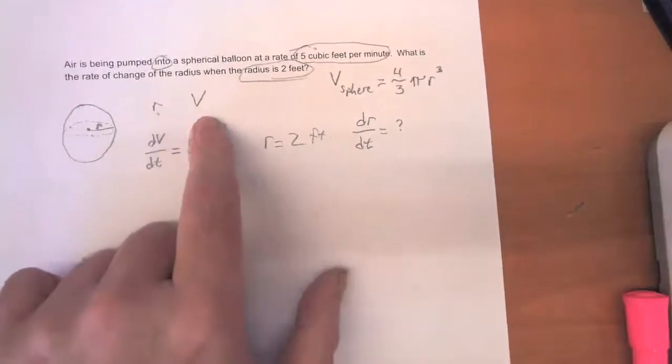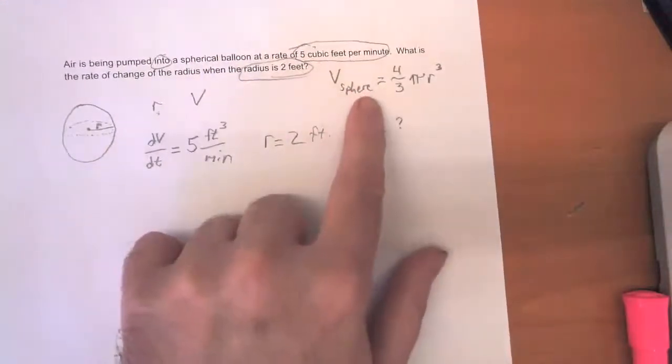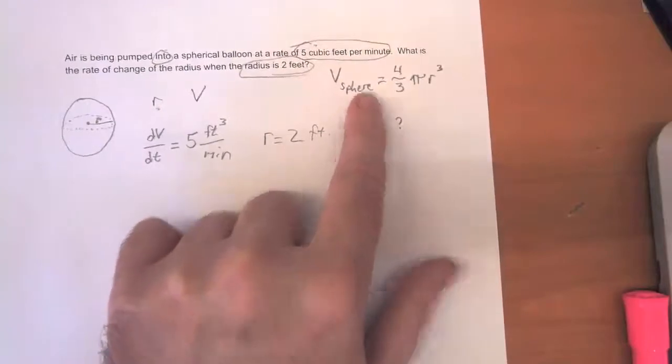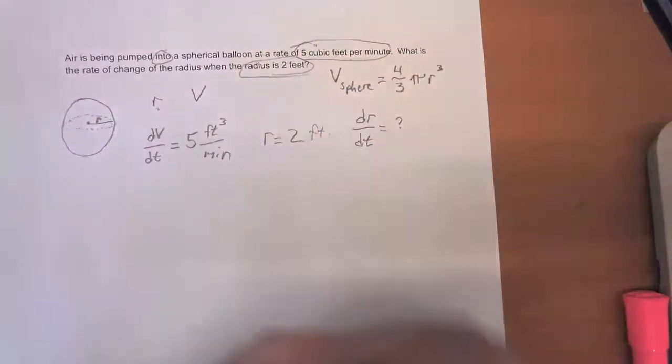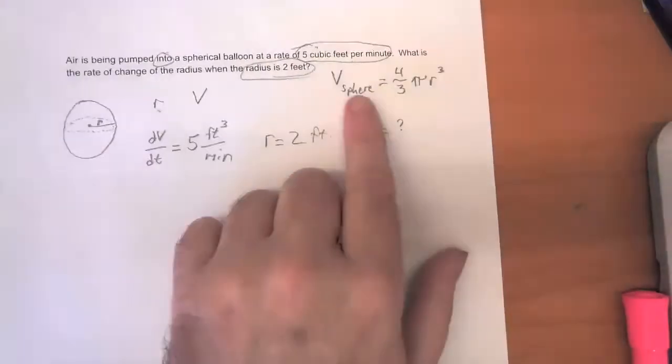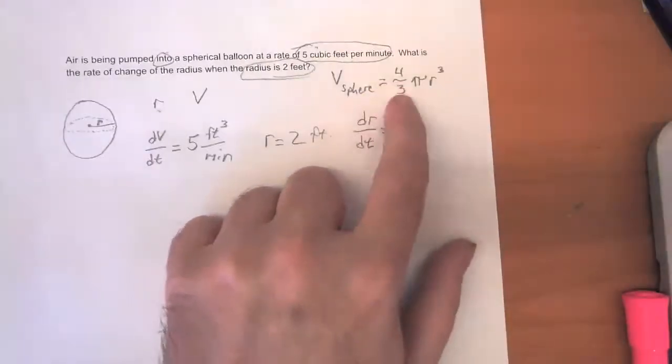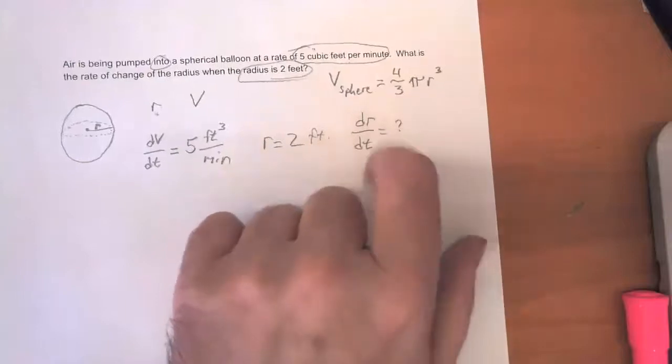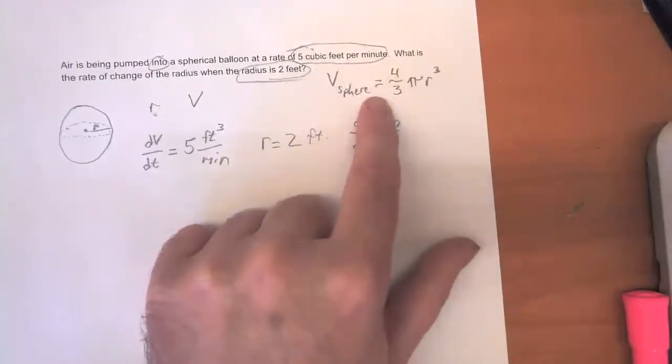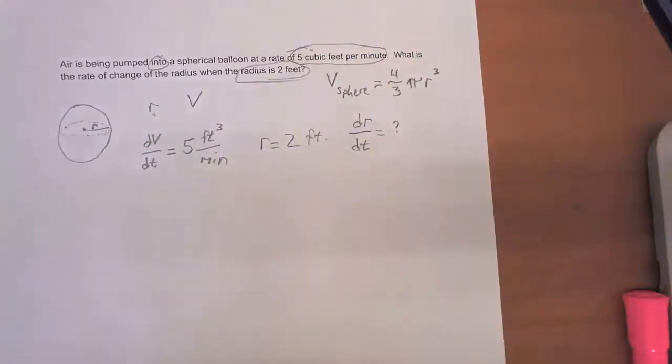We know the definition of the volume of a sphere. I actually gave it to you over here. Sometimes it'll be a simple thing like a Pythagorean theorem and other times it'll be a fact like this that the volume of a sphere is equal to four thirds pi times the radius cubed V = (4/3)πr³. Sometimes they'll give this to you if it's something that I wouldn't expect you to have memorized. We'll go ahead and do that.